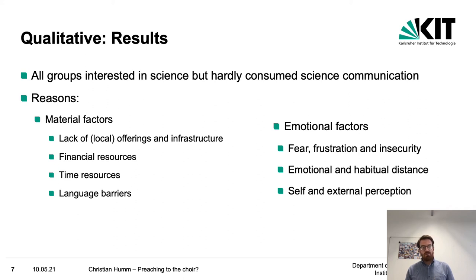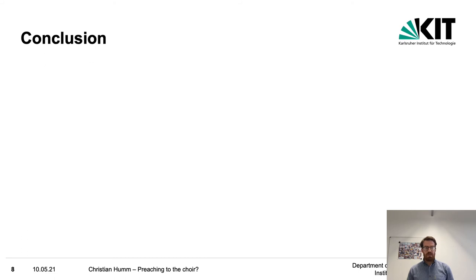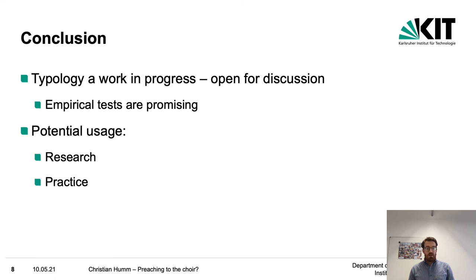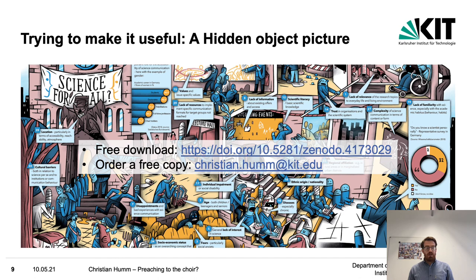You can find our more detailed analysis in the article on the slide. To sum up my insight talk, the typology of exclusion factors in science communication remains a work in progress and is absolutely open for discussion. Empirical tests with quantitative and qualitative methods are promising. However, not all factors have been tested for their relevance and usability in research. We hope the typology can serve both researchers in analyzing exclusion in science communication and practitioners in self-reflecting their own work, thus leading to more inclusive science communication. To make the typology accessible especially to practitioners, we created a hidden object picture, of which you can see a detail on the slide, where exclusion factors are visually illustrated and accompanied by short explanations. You can download it for free via the link or order a free copy by emailing me.